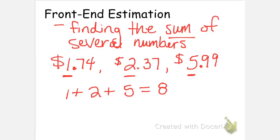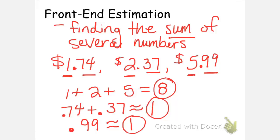Now we're going to look at all the numbers on the back of the number. Everything we haven't looked at so far. And we're going to say, well, about how much does that add up to? I can look at that and say that $0.74 plus $0.37 is about $1. And then on my last number, the $0.99 is also about $1. So now I'm going to add together the 8, the 1, and the other 1. And so I have an estimated cost for my shopping trip of about $10.